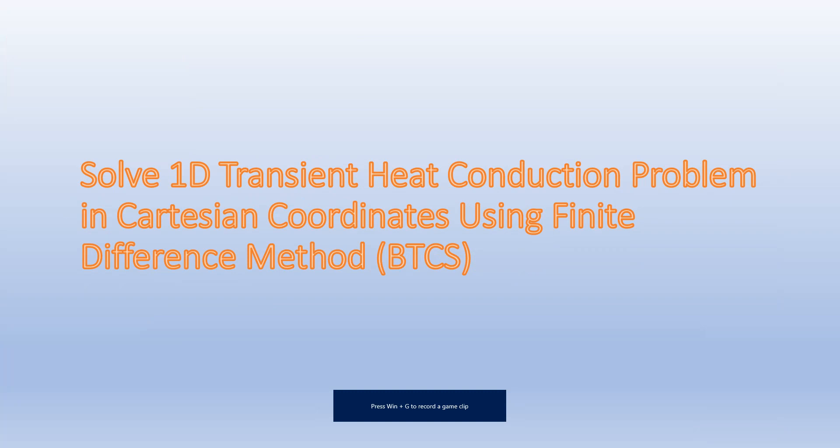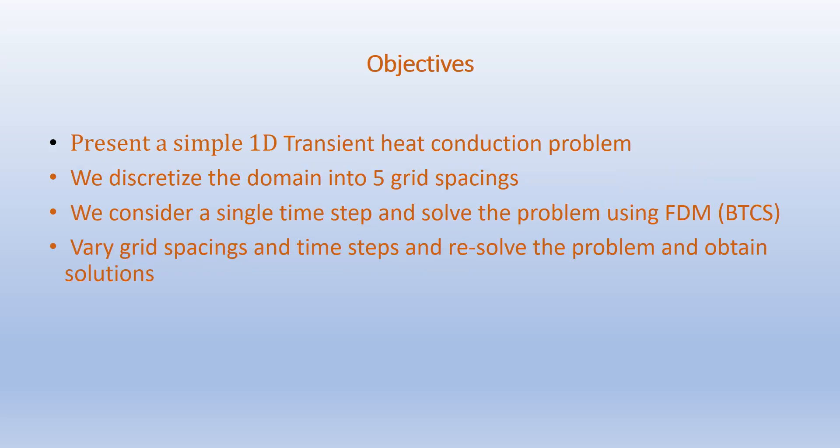Hello friends. In the last video we solved a 1D transient heat conduction problem in Cartesian coordinates using the forward time centered space (FTCS) finite difference method. In this video we're going to solve a 1D transient heat conduction problem in Cartesian coordinates using backward time centered space (BTCS) finite difference method. Our objectives are to present a simple 1D transient heat conduction problem, discretize the domain into five grid spacings, consider a single time step, and solve the problem using the BTCS finite difference method. We will then vary the grid spacings and time steps and resolve the problem.